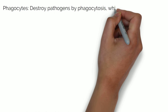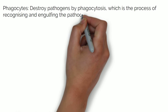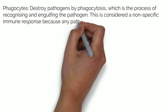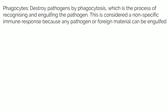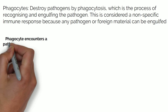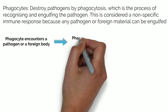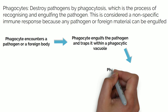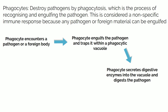Phagocytes destroy pathogens by phagocytosis, which is a process of recognising and engulfing the pathogen. This is considered a non-specific immune response because any pathogen or foreign material can be engulfed. Firstly, a phagocyte encounters a pathogen or foreign body, engulfs it and traps it within a phagocytic vacuole, then secretes digestive enzymes into the vacuole and digests the pathogen.